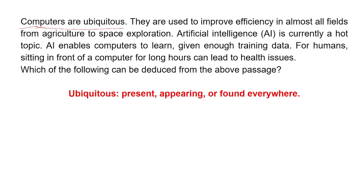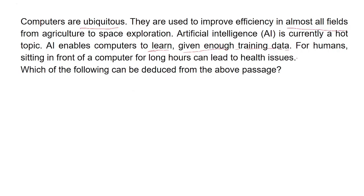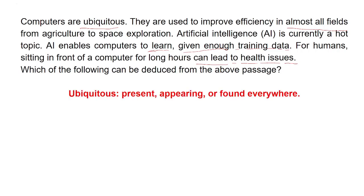The next sentence is: they are used to improve efficiency in almost all fields, from agriculture to space exploration. Then: artificial intelligence is currently a hot topic. Next: AI enables computers to learn given enough training data. And finally: for humans, sitting in front of a computer for long hours can lead to health issues. I have marked the important keywords in the paragraph.